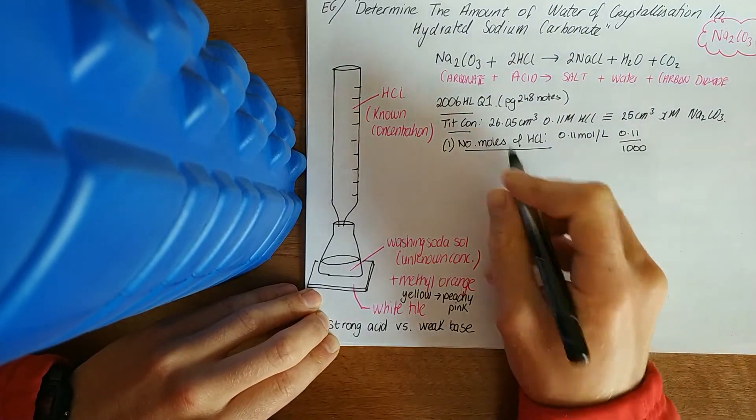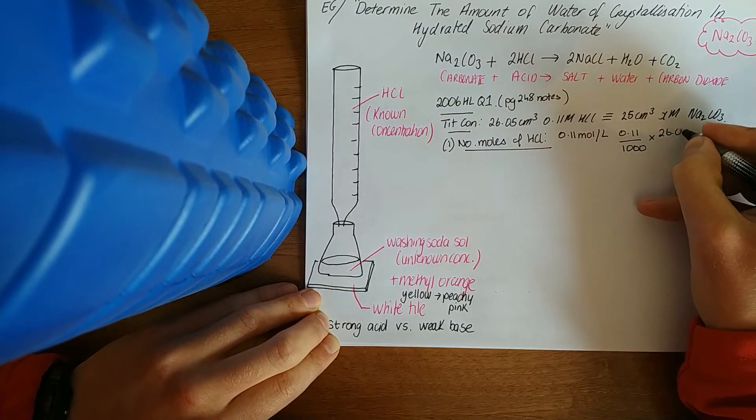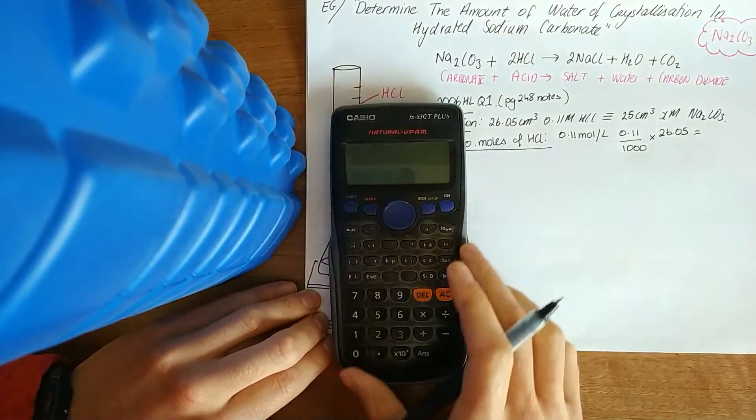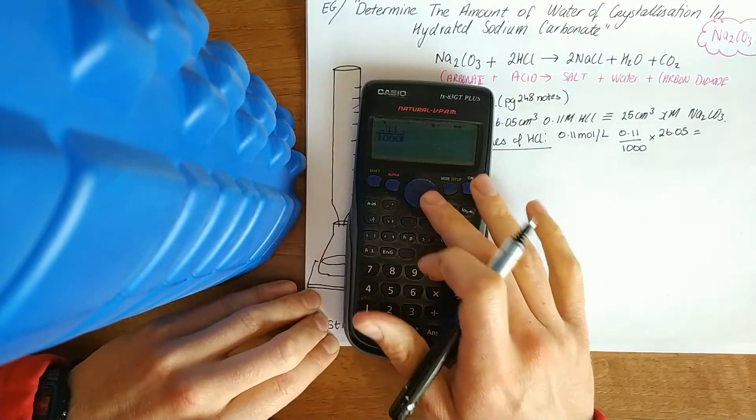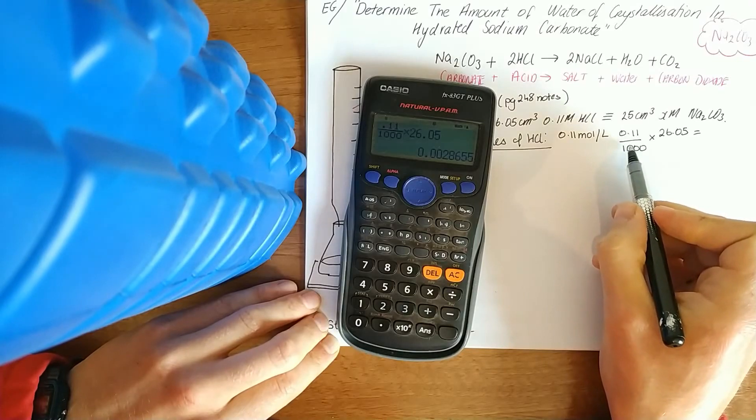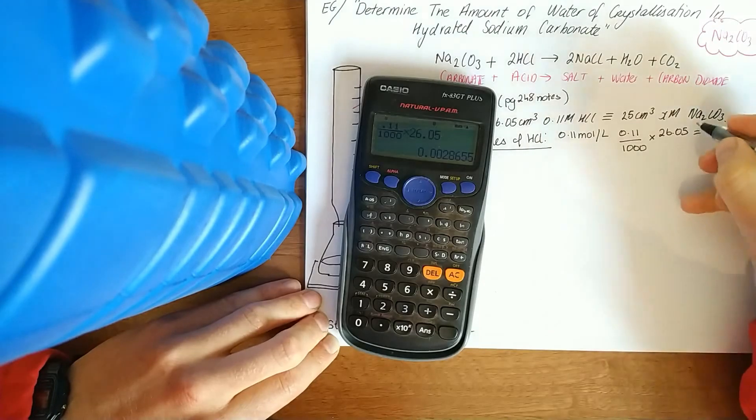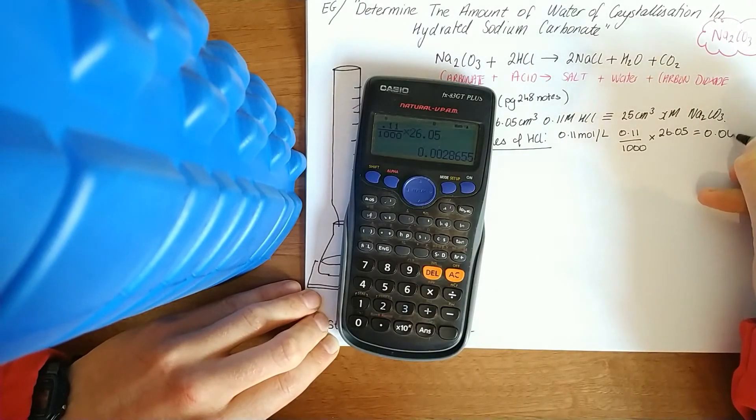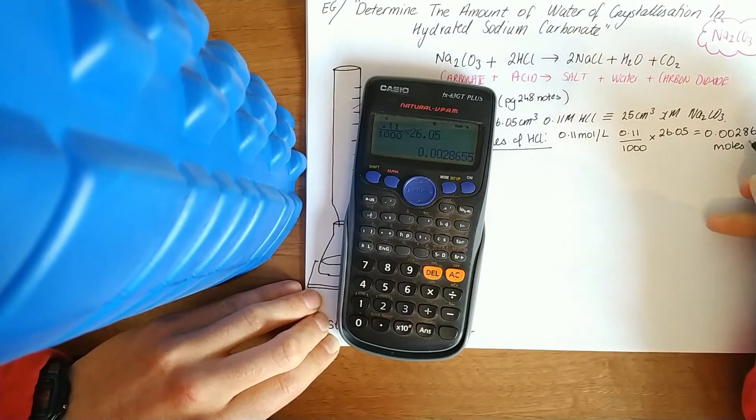0.11 M, let's divide. We're using centimeters cubed, so one litre is a thousand centimeters cubed. 0.11 over a thousand. Now that gives me per centimeters cubed. We have 26.05, so times it by that. That'll be the same for all your titrations, you start it off that way.